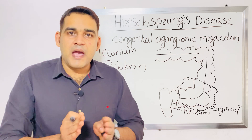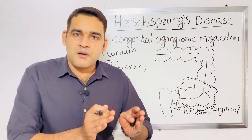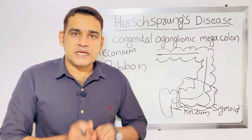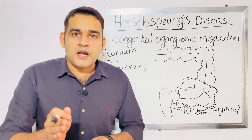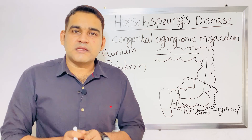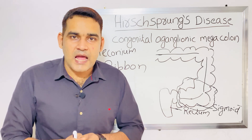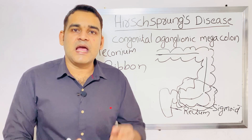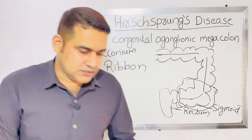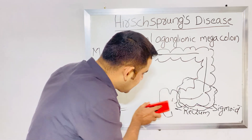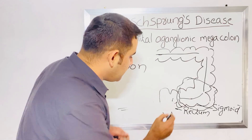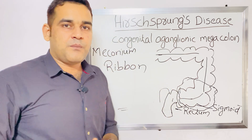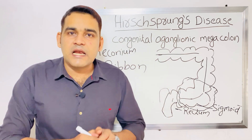The management is surgical. Surgical management involves removing the affected part — the segment where ganglion cells are absent — and performing anastomosis, which means making a connection with the unaffected part of the colon.